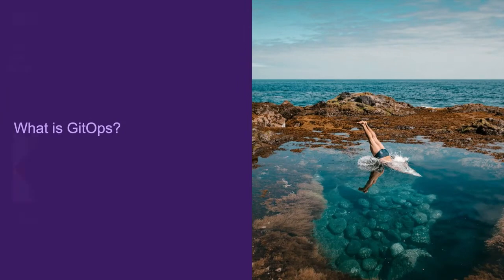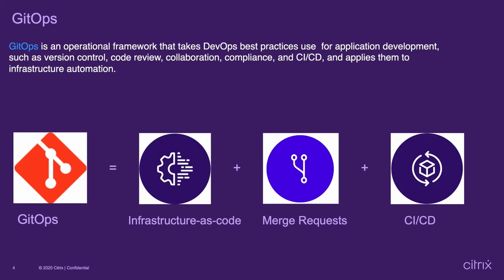So what is GitOps? GitOps is an operational framework that uses DevOps best practices like version control, code review, and automation. GitOps also uses a Git repository as the single source of truth for infrastructure definition. Infrastructure as code is the practice of keeping all infrastructure configuration stored as code. Having infrastructure's desired state described as code allows you to deploy the same service over and over again multiple times. GitOps uses merge requests as the change mechanism for all infrastructure and application updates.